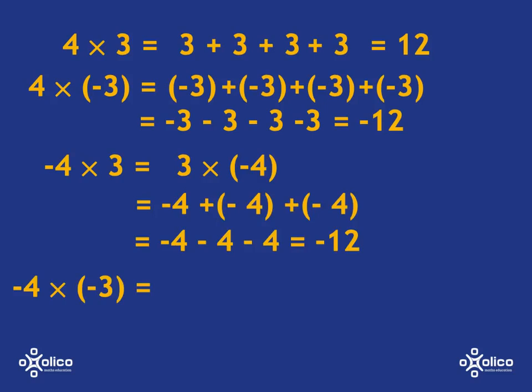The one that's going to cause us a little bit of problems is negative 4 multiplied by negative 3. Because all the other ones we could talk about as 4 lots of negative 3 or 3 lots of negative 4, whereas now it's a bit more abstract with negative 4 multiplied by negative 3. So what we're going to see is what makes most sense, and that's what we're going to use to get the answer.